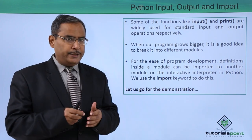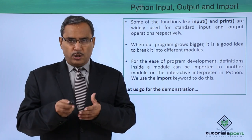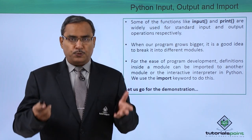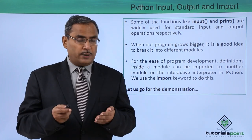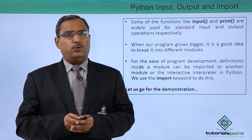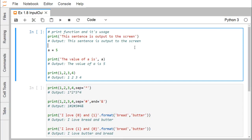To have a better idea, let us go for one practical demonstration where we shall be showing you how to take inputs, how to put outputs on the screen, and how we are going to import modules in our current code. We are going to discuss the print function and its usage. To print a sentence or to print a variable value on the screen, we use the method print. So print this sentence is output to the screen here.